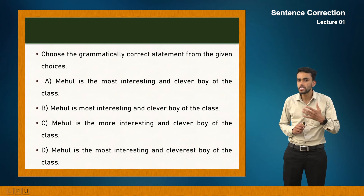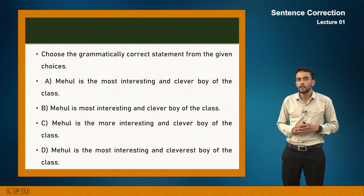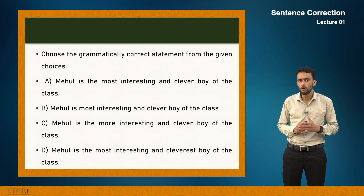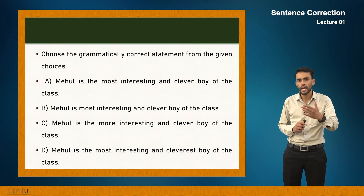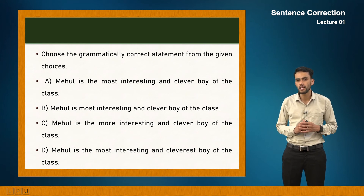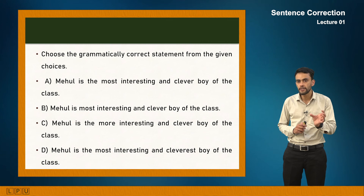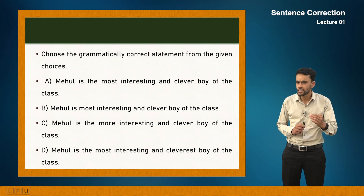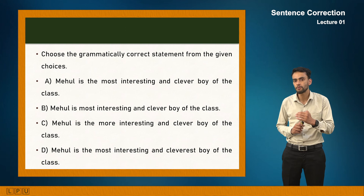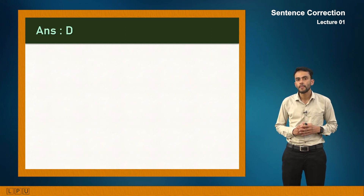Choose the grammatically correct statement. Option A: 'Mehul is the most interesting and clever boy of the class.' Option B omits the article 'the' — incorrect. Option C: 'Mehul is the more interesting and clever boy' — wrong, because 'more' implies a comparison not stated. Option D: 'Mehul is the most interesting and cleverest boy of the class' — correct, maintaining parallel superlative degree across both adjectives. So option D is correct.